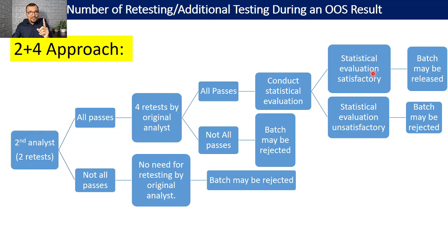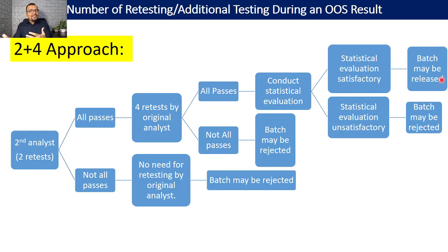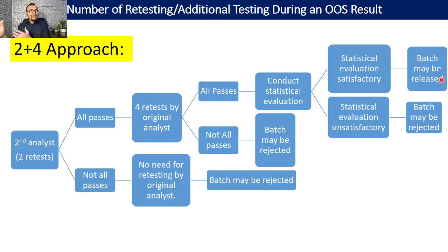In that situation, QA may take a stand on releasing the batch. However, these 2 plus 4 re-measurements alone will not be the sole basis for release. QA will also consider the history of the product — from product development, process validation, and stability studies — and check for any market complaints. If there are no significant market complaints or product issues, QA can proceed with batch release.